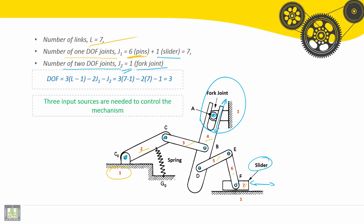So degrees of freedom here equals 3. So we need three input sources to control this mechanism.